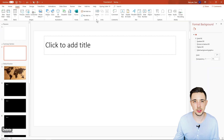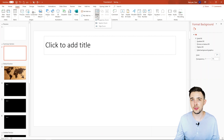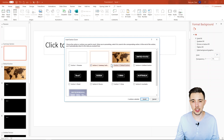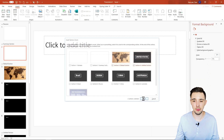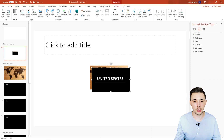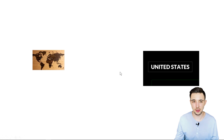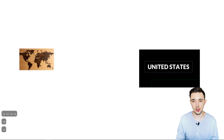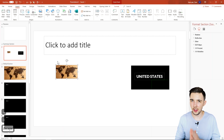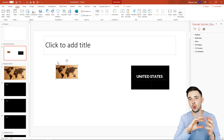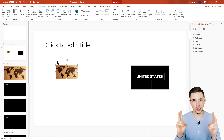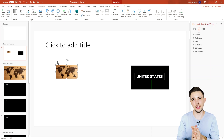Next, let's look at Section Zoom. If I click on this, it's very similar to Summary Zoom, but what's different is that you can just pick a couple of sections. It's not going to be as organized and it won't create a new section called Summary Section. It just inserts them on your current slide, and you can move these around and adjust sizing. You can click through all your slides in that section and zoom back out. It's fairly similar to the previous option — just not as organized and clean.